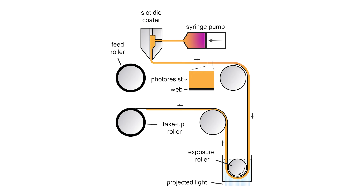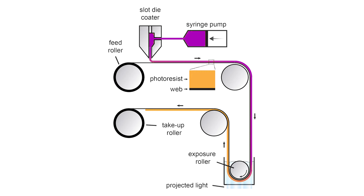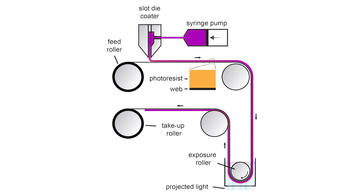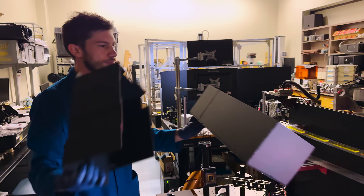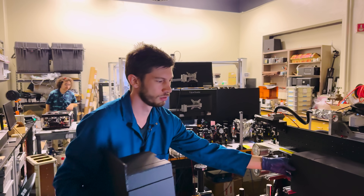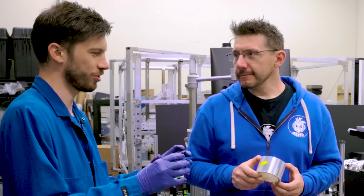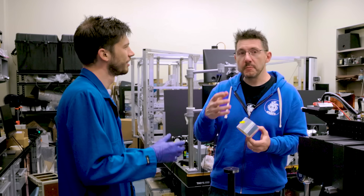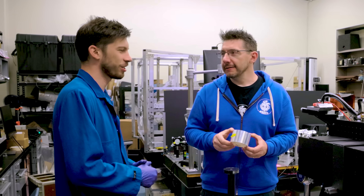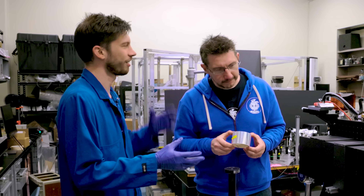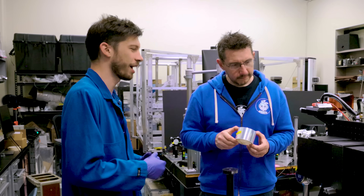So that material sticks onto this pretty well because it has to follow all of these turns and loops. The reason it's covered up is that there is a photo initiator in this gel mixture — something that reacts to light — which makes it sensitive to light including room light, so we need to keep it covered so it doesn't start to react.